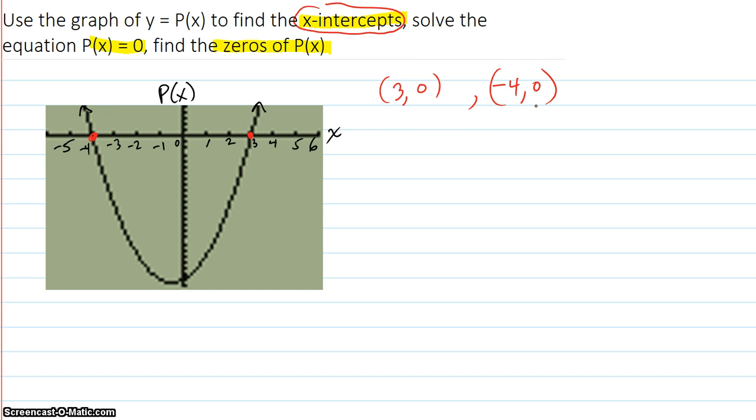But notice that the p of x value for each of those is zero. So, if we're solving p of x equaling zero, then that means that the x values are going to be 3, because that's the one that's paired with zero, or negative 4.